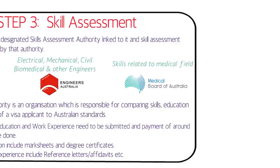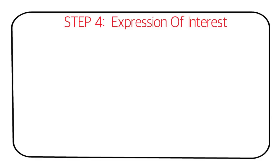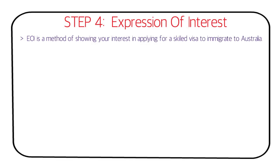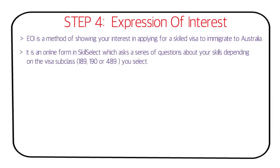Step four is the Expression of Interest, also called EOI. It is a method of showing your interest in applying for a skilled visa to migrate to Australia. It's an online form in SkillSelect that asks a series of questions about your skills. There are three visa subclasses to choose from: visa 189, visa 190, and visa 489.